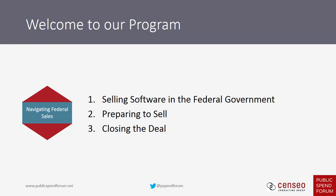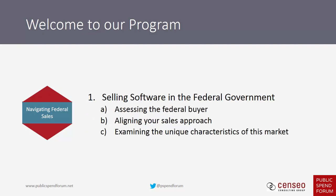Within this learning path we have three individual modules, and each is about an hour in length. In Module 1, Selling Software to the Federal Government, our objectives will be assessing the federal buyer, aligning your sales approach, and examining the unique characteristics of this market.